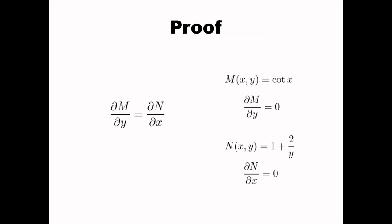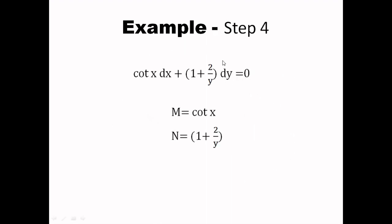Now the time has come to prove that the equation has been turned from non-exact to exact. Taking the partial derivative of the new M — which is cot(x) — with respect to y gives 0, since M is a function of x only. Taking the partial derivative of the new N — which is (1 plus 2/y) — with respect to x also gives 0, since there is no x term. Both partial derivatives are equal, confirming this is now an exact differential equation, with new M equal to cot(x) and N equal to 1 plus 2/y.